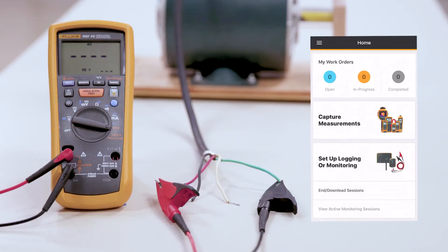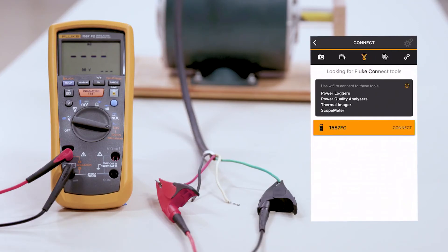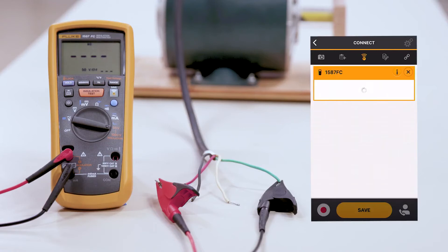We're going to go over to our phone and hit the capture measurements. As you can see, the 1587 FC is now connected to it. We'll connect to that meter.